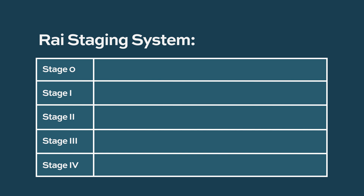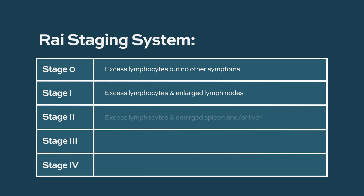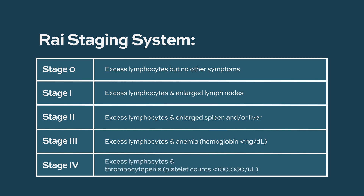Rai stage 0 is when you have an excess of lymphocytes but you don't have any other problems that you can discern. In Rai stage 1, you develop lymph gland swelling. In Rai stage 2, you develop spleen and liver enlargement. In Rai stage 3, you can become anemic. In Rai stage 4, your platelets go down as well.